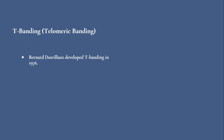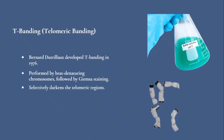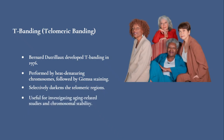T-banding was developed by Bernard Dutrelo in 1976. T-banding is performed by heat-denaturing chromosomes, typically in a phosphate buffer, followed by Giemsa staining. This selectively darkens the telomeric regions while leaving the rest of the chromosome lightly stained. This technique helps investigate aging-related studies and chromosomal stability by highlighting these repetitive DNA sequences.